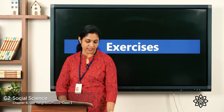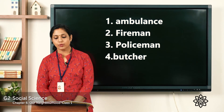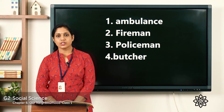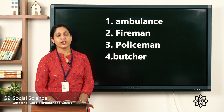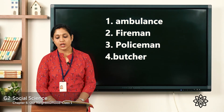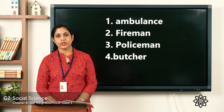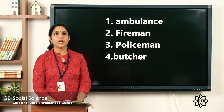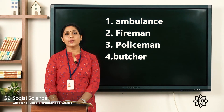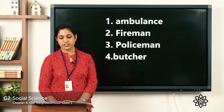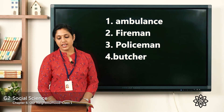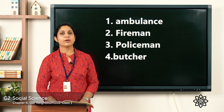Now let's check the answers. Question 1: I am a vehicle; I carry sick people to the hospital; there is a red cross on me — I am an ambulance. Question 2: I work in a fire station; when there is a fire I go in a fire engine to put out the fire — I am a fireman. Question 3: I work in a police station; I protect people from thieves and other dangers — I am a policeman. Question 4: I cut and sell meat and chicken in the market — I am a butcher.